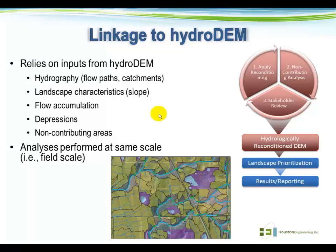We're going to look at some landscape characteristics, specifically the slope, which comes directly from the HydroDEM, the flow accumulation grid, the depression areas, and the non-contributing areas. It's also important to stress that these analyses are all performed at the same scale as the HydroDEM was created for — in this case, the field scale. Typically we're creating hydrologically reconditioned DEMs at about a 3-meter grid scale, sometimes finer or coarser depending on project needs.